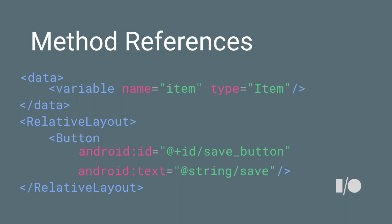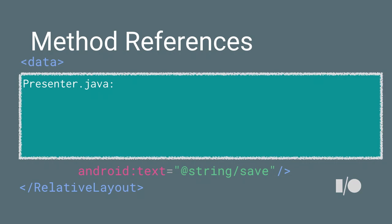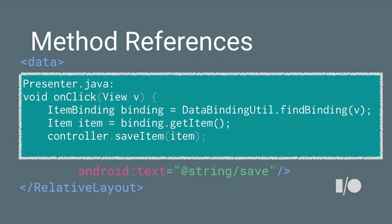With method references, you can say: we know onClick is an event. The presenter variable is declared separately, so there's still no magic. In the presenter, we automatically call this method — you receive the view because the onClick listener receives the view. You get the binding using the findBinding method from any view, get the item from there, and then do whatever you want. But this was still a lot of unnecessary code.